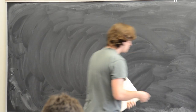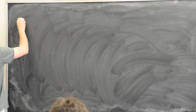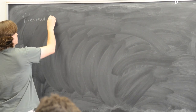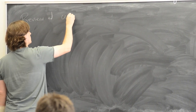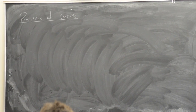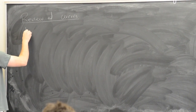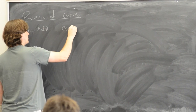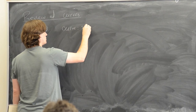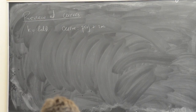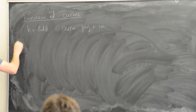Today is going to be about elliptic curves. I want to start by reviewing some facts about algebraic curves that we'll need. For the whole lecture today, K is going to denote a field, and 'curve' is going to mean projective and smooth unless I say otherwise.